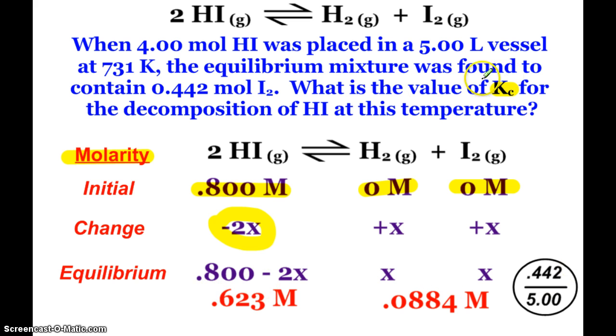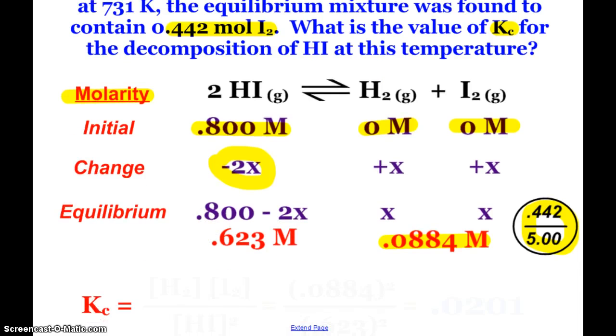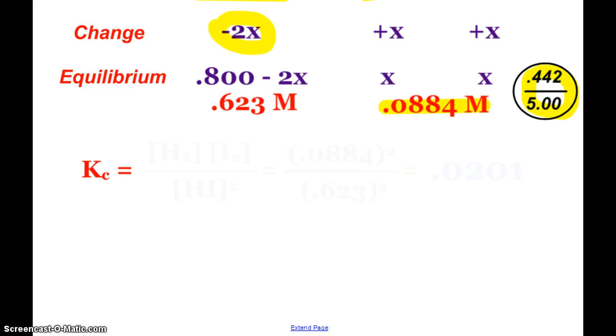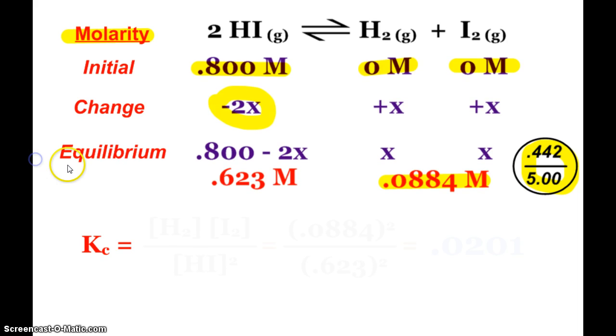And then, since at equilibrium there were 0.442 moles of iodine, 0.442 in 5 liters, so that's my x. And because of that, I can figure out the concentration of the hydrogen iodide as well. Now that I know my concentrations at equilibrium, I can plug into my equilibrium expression.